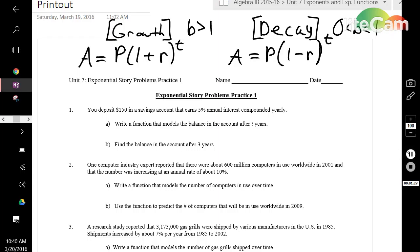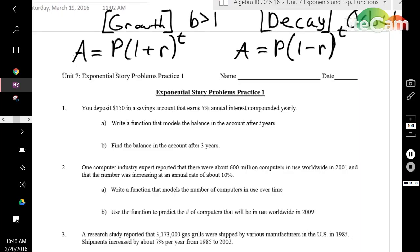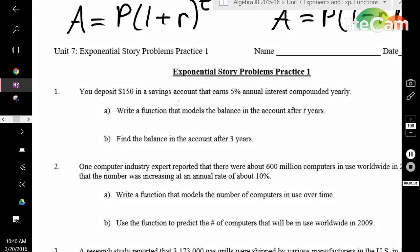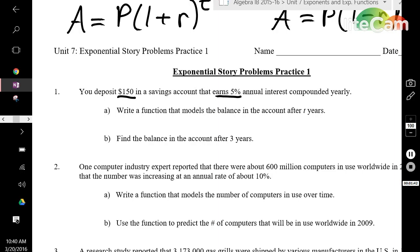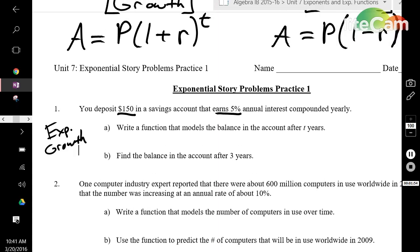If we look at number 1, it says you deposit $150 in a savings account that earns 5% annual interest compounded yearly. Earning means you're making money, which means your amount of money grows. It's going to be exponential growth.